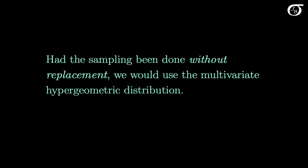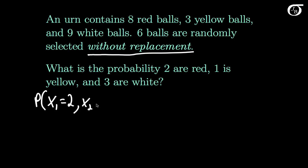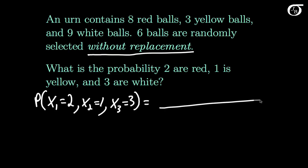Let's run through a quick example of that. Here we've got the same problem, except sampling is done without replacement. When we say without replacement, if we pull out a red ball we set it aside and it doesn't go back in, then we randomly select another ball. So if we draw a red ball on the first trial, it's less likely to get a red ball on the second trial — those trials are no longer independent. We still have random variables x1, x2, and x3, and we still want the probability that x1 takes on 2, x2 takes on 1, and x3 takes on 3.